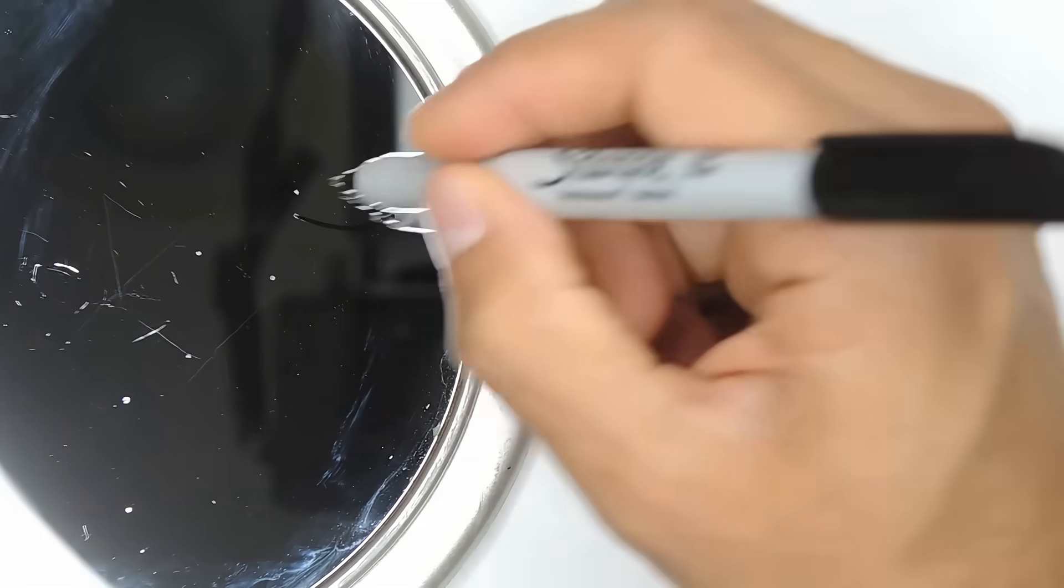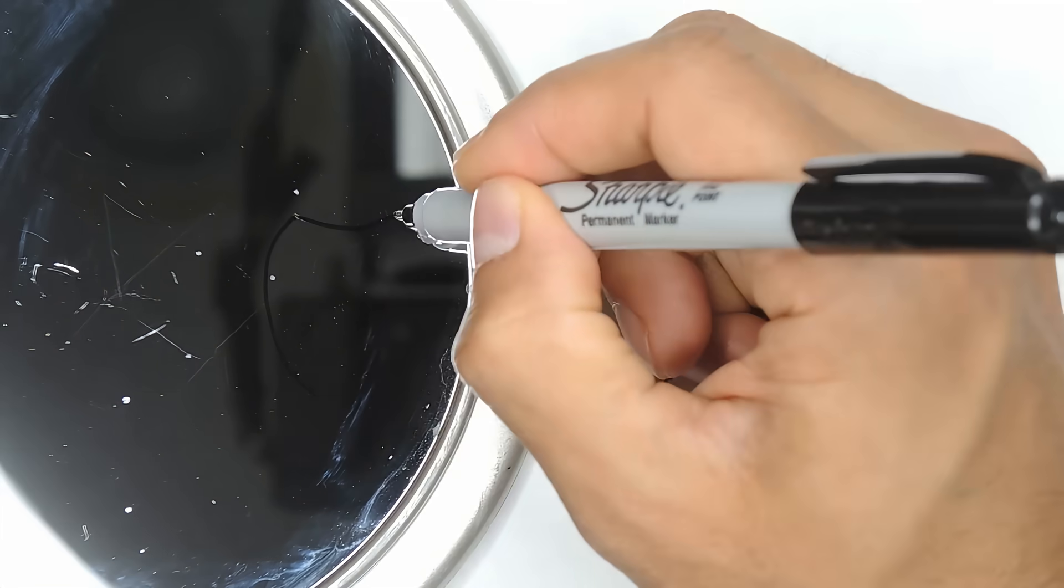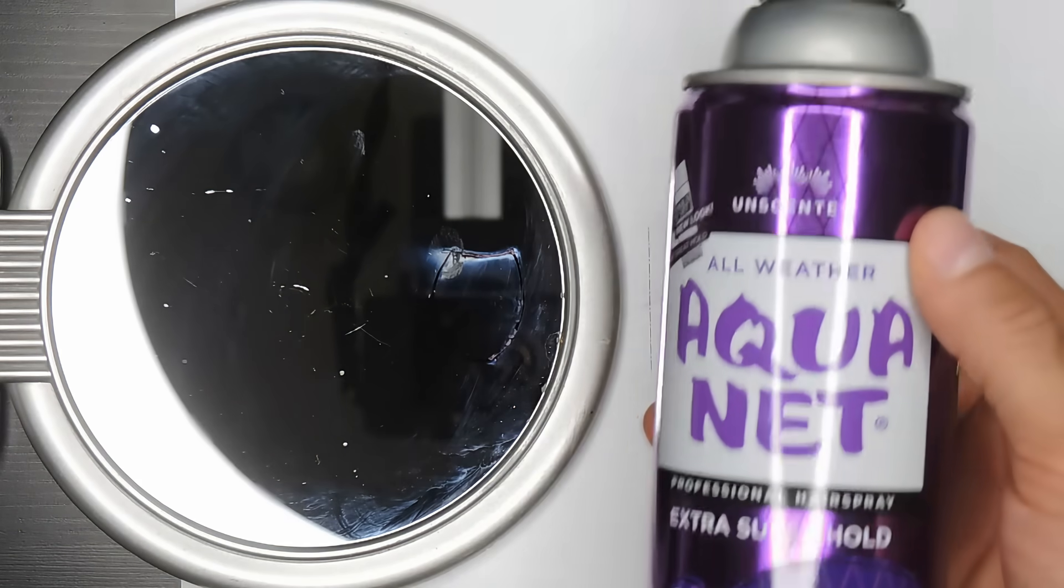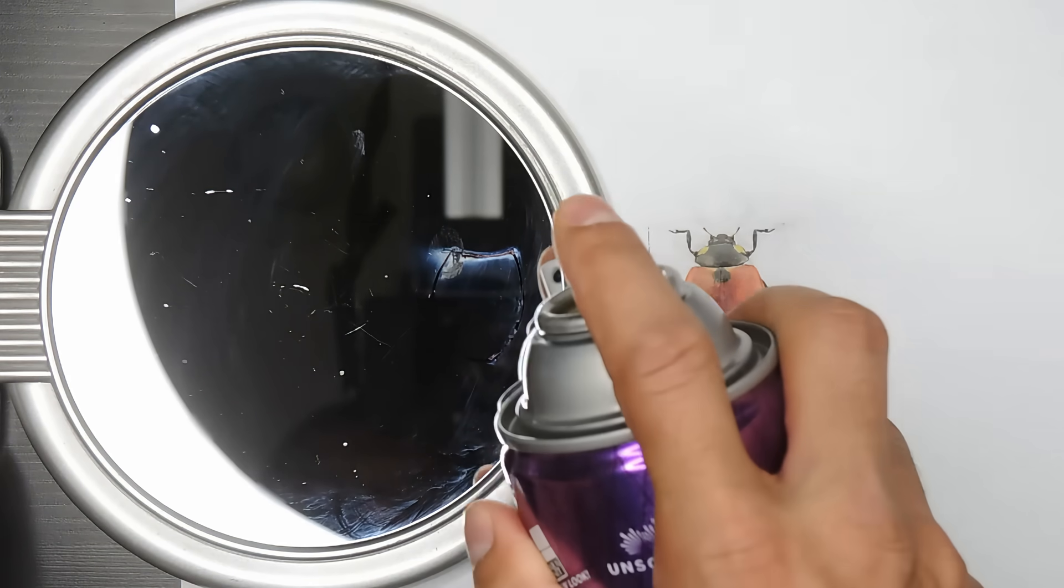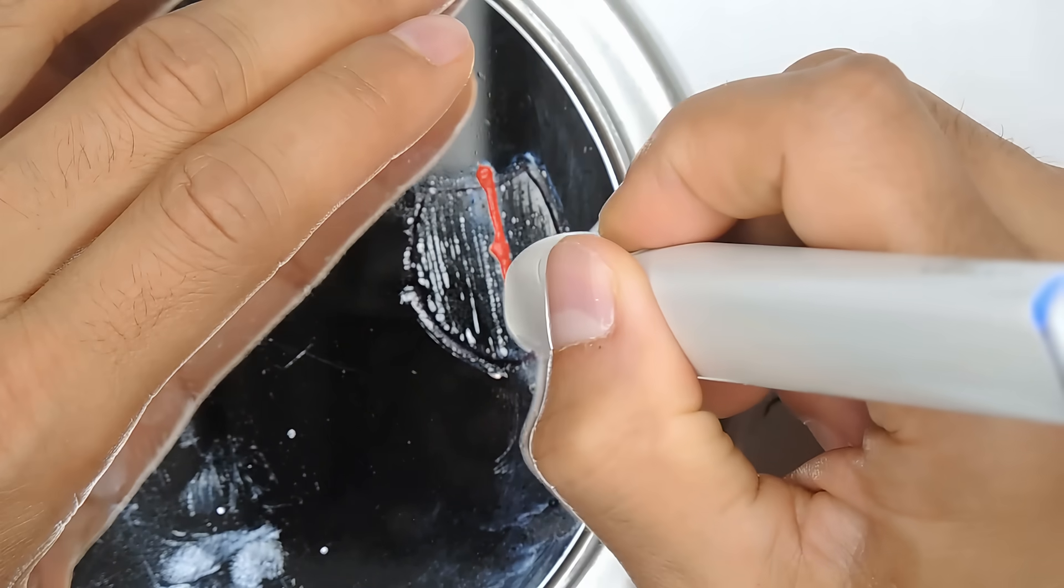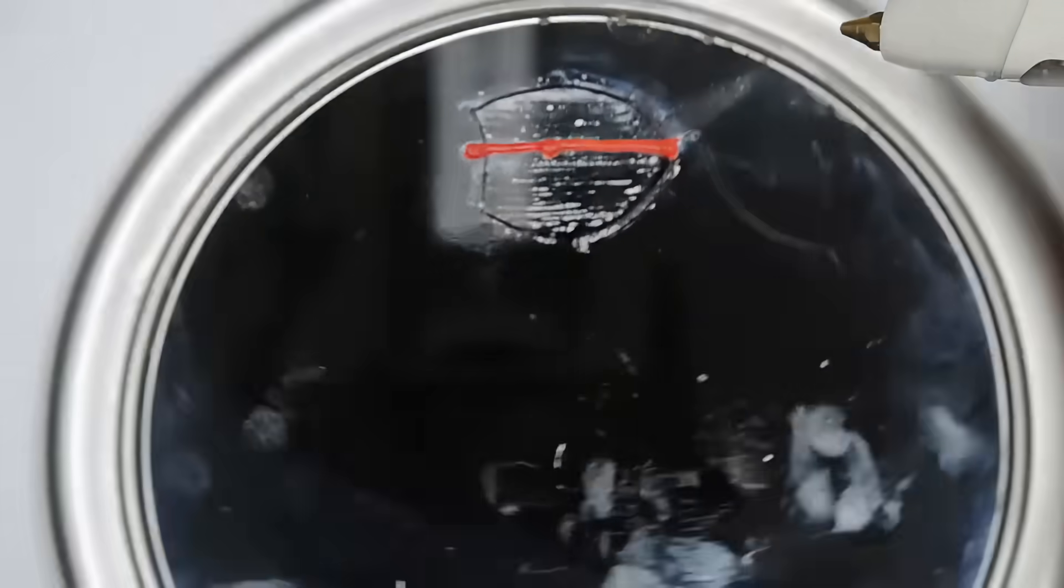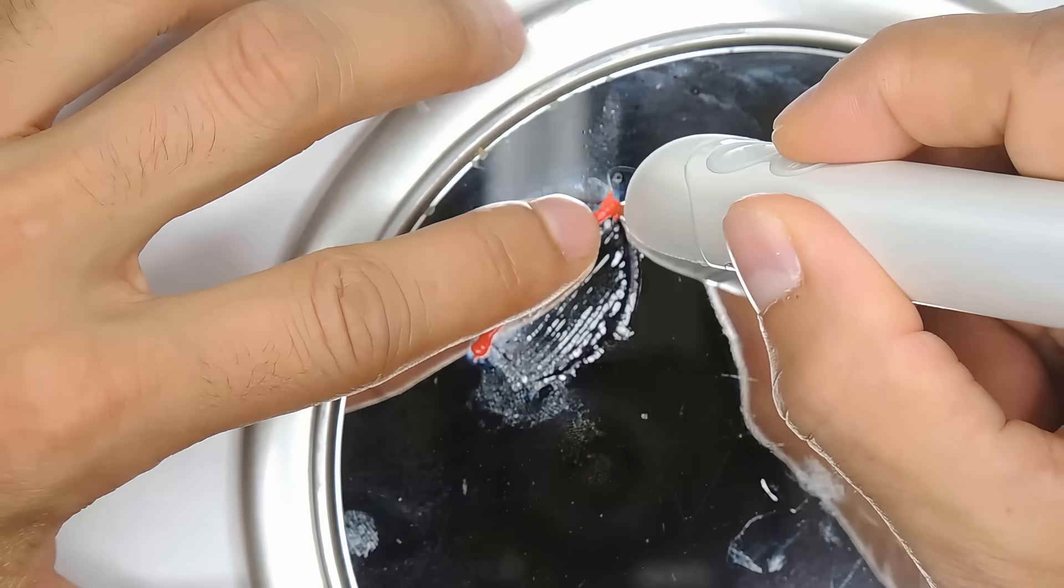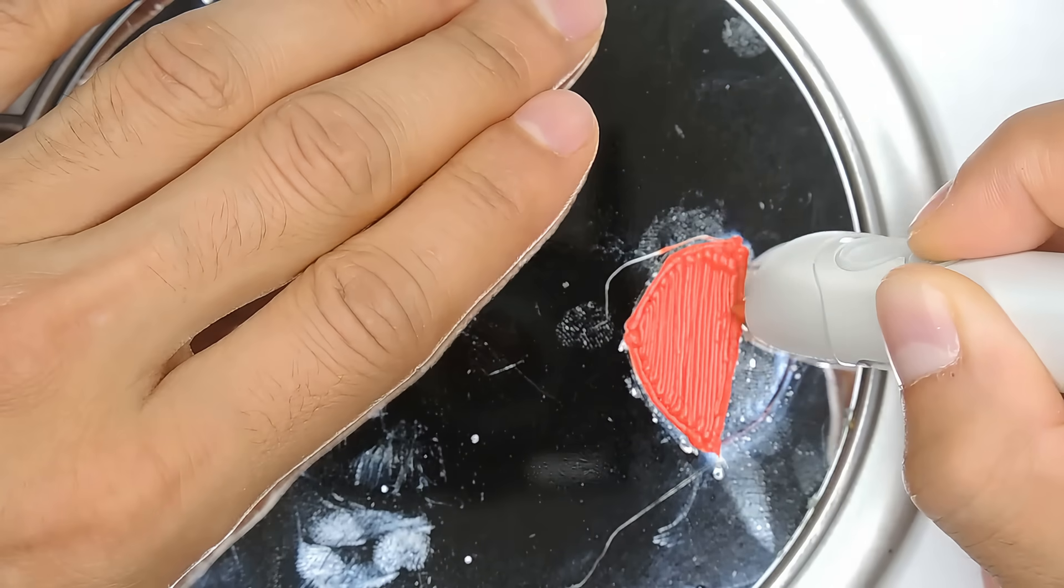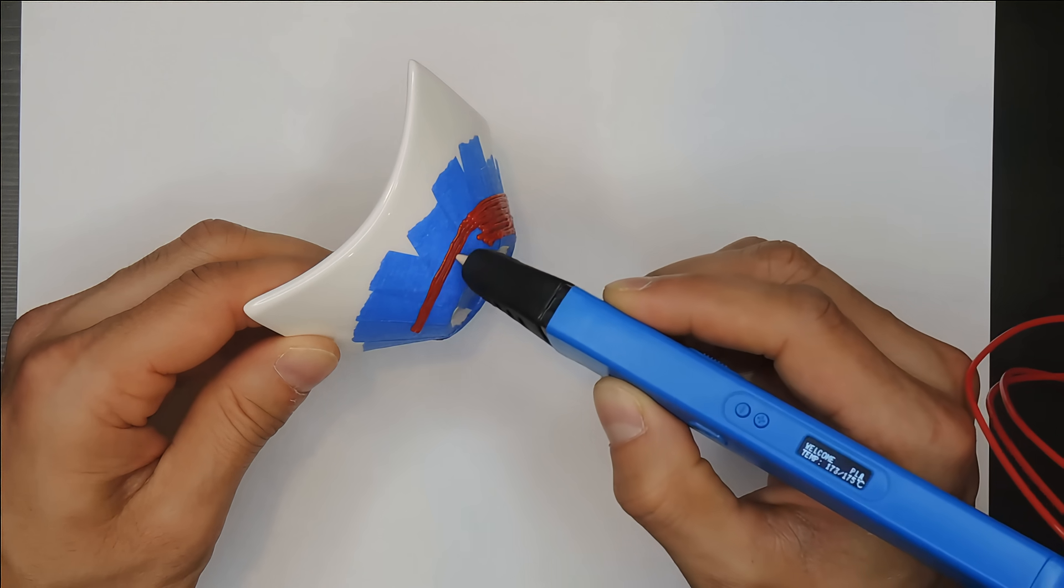For not sticking enough, it usually means that you're trying to pen onto something that is really smooth. Filament sticks best to surfaces that are not smooth. In fact, the rougher the surface, the better. If you do need to pen on something that is super smooth, like clay, porcelain, or glass, try using hairspray or penning on blue painter's tape. Both of these things help filament stick by making the surface rougher.